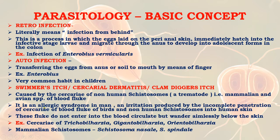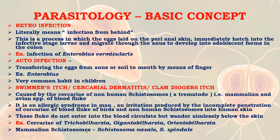Swimmer's itch is caused by cercariae of non-human schistosomes — trematodes of mammalian and avian species of blood flukes. It is an allergic syndrome in man, an irritation produced by the incomplete penetration of cercariae of blood flukes of birds and non-human schistosomes into human skin. These blood flukes do not enter the blood circulation but wander aimlessly below the skin. Examples include cercariae of Trichobilharzia (avian schistosomes), Gigantobilharzia, and Orientobilharzia.